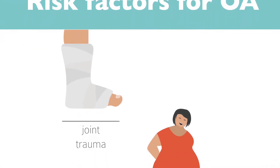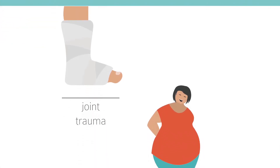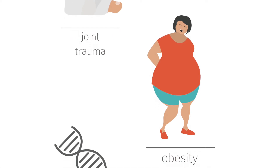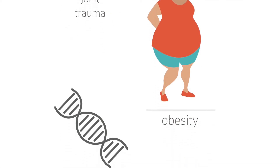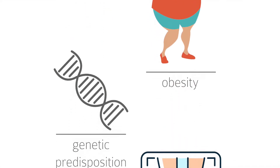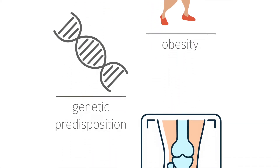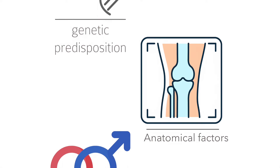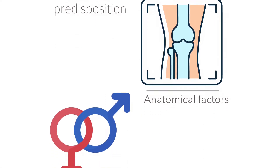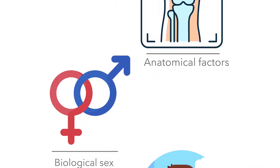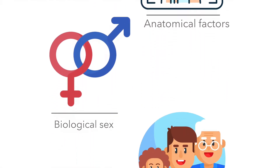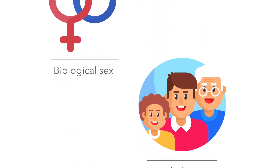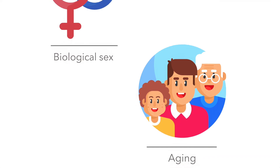These risk factors include joint injury, obesity, genetics, anatomical factors including joint shape and alignment, and sex. But one of the most important risk factors for OA, which we will discuss first, is ageing.